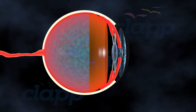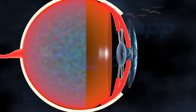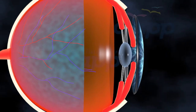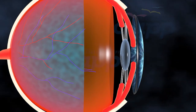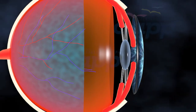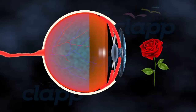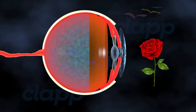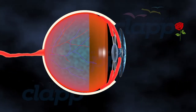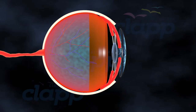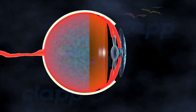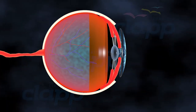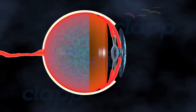Accommodation is made possible by the action of the ciliary muscles surrounding the lens. When you shift your focus from near to far or vice versa, these muscles contract or relax, causing the lens to change its shape accordingly.